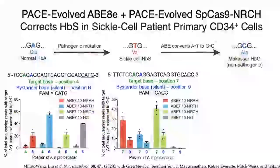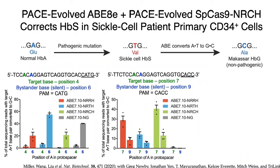Integrating ABE8E with the new NR-PAM Cas9 variants enables editing efficiencies and precise allele access that were really not possible before. For example, fine-tuning the positioning of an ABE8E with an evolved CACC-PAM variant enabled us, in collaboration with Mitch Weiss's lab, to achieve more than 80% correction of the hemoglobin mutation that is the most common cause of sickle cell disease, into a non-pathogenic variant called hemoglobin Makassar, in primary human CD34-positive cells from a sickle cell patient—with minimal indels. This level of editing performance has exciting clinical applications for the treatment of globinopathies.